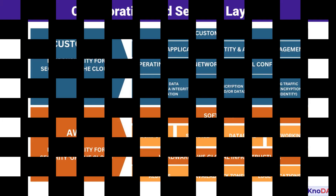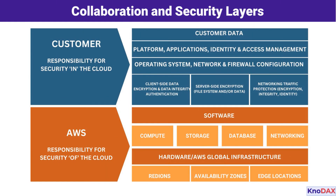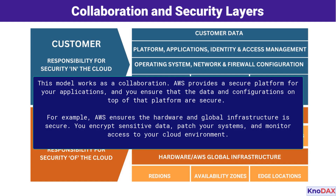This model works as a collaboration. AWS provides a secure platform for your applications, and you ensure that the data and configurations on top of that platform are secure. For example, AWS ensures the hardware and global infrastructure is secure, while you encrypt sensitive data, patch your systems, and monitor access to your cloud environment.